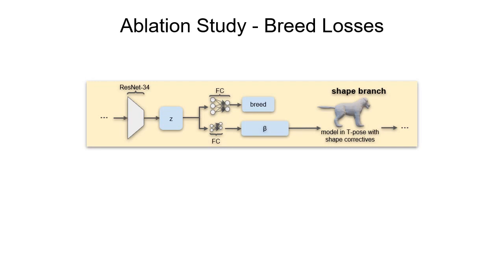To evaluate and understand how the breed losses contribute to the accuracy, we evaluate them separately. We start with a baseline network that is trained with all losses except the breed losses.